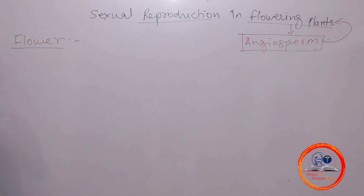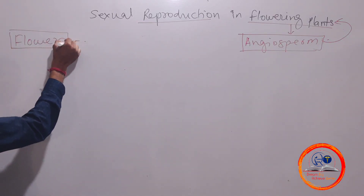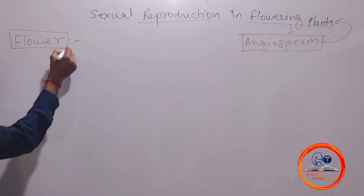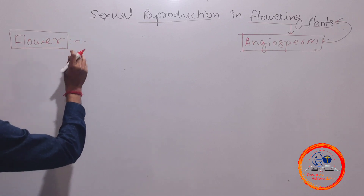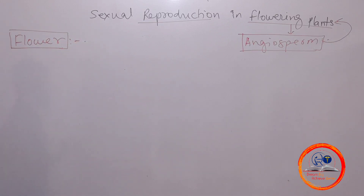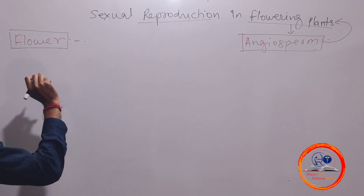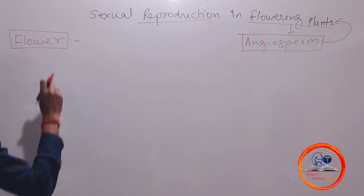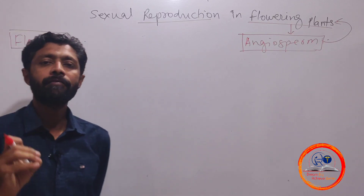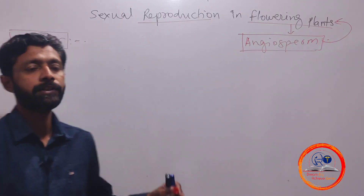Besides these organs, there is a most important specialized reproductive organ. The flower is considered as a highly modified and condensed reproductive organ.